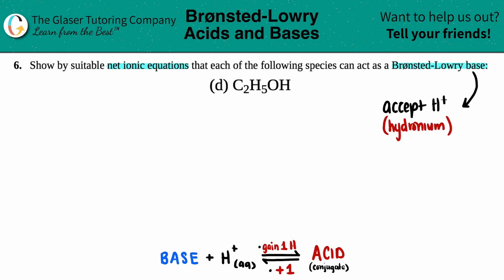But for right now we're just going to be accepting an H+ because we're focusing on the base here. So how do we write that in a net ionic equation? Well, the base is coming together with the proton, aka the hydronium or H+. Since they're coming together, the base is accepting the H+, so the base and the H+ have to be on the same side. So I'm going to start there: C2H5OH plus H+.